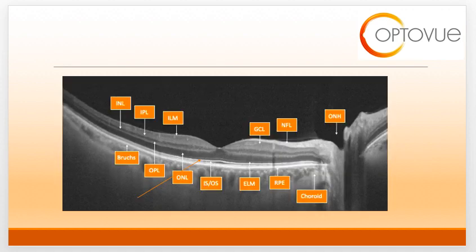You may recall this slide from previous webinars. On this slide, I've delineated the various parts of the retina and choroid. The orange arrow is pointing to the subretinal space, which is what we will discuss in this video.